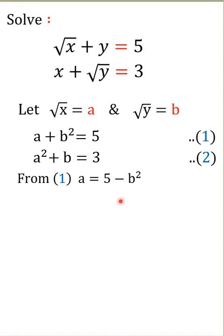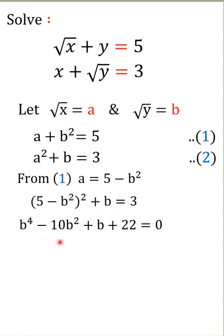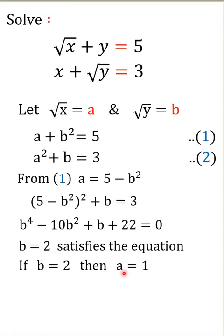This forms a quartic equation. If you put b = 2, it satisfies the equation. If b = 2, then a = 5 - 2², which equals 1, so a = 1.